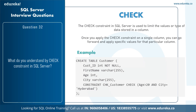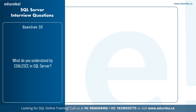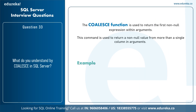The next question is: what do you understand by COALESCE in SQL Server? The COALESCE function is used to return the first non-null expression within the arguments. For example: 'SELECT COALESCE(customerID, customerName, amount) FROM customers' — this returns the first non-null value from customerID, customerName, and amount columns.